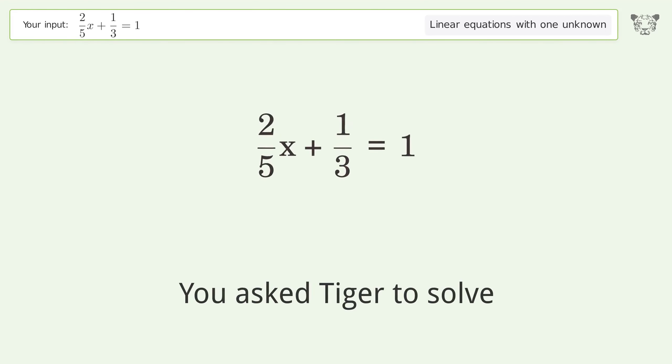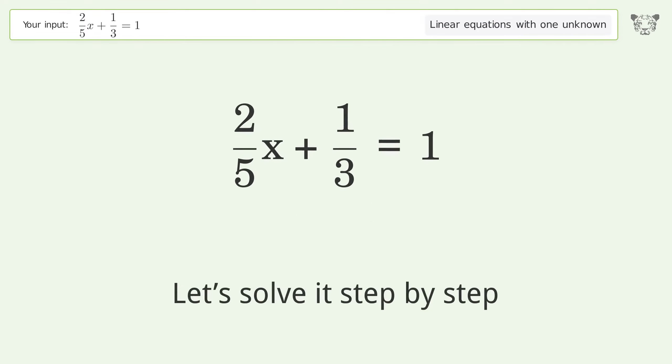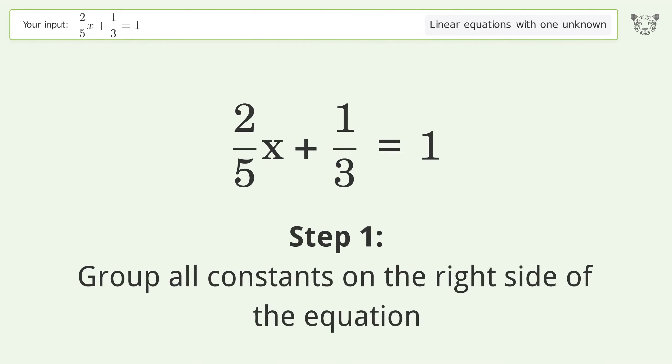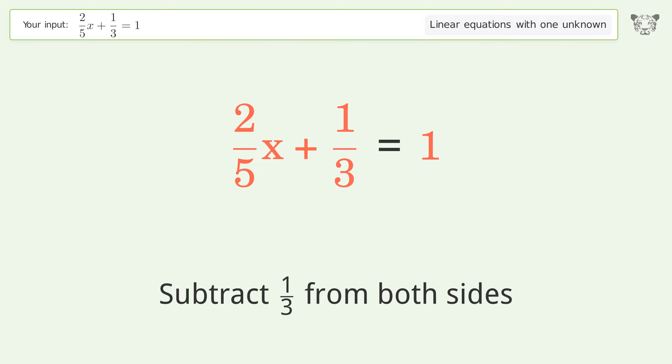You asked Tiger to solve this. It deals with linear equations with one unknown. The final result is x equals 5 over 3. Let's solve it step by step. Group all constants on the right side of the equation. Subtract 1 over 3 from both sides.